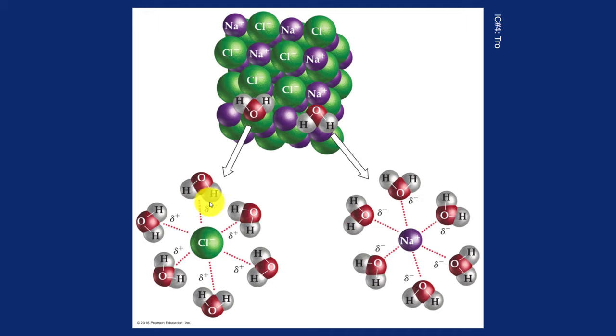And again, you can see how the positive sides of the water molecules are attracted to the negative ion, the chloride anion, and how the negative sides of the water molecules are attracted to the positive sodium cation. Once the water molecules surround the ions, then they can just float freely in solution.